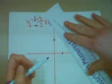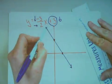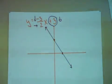I'm going to use my straight edge and I'm going to create a nice straight line. And I have graphed my equation y equals negative 3 halves x plus 3.